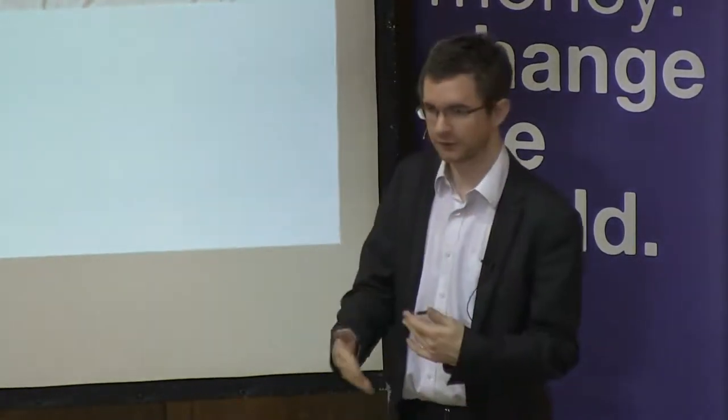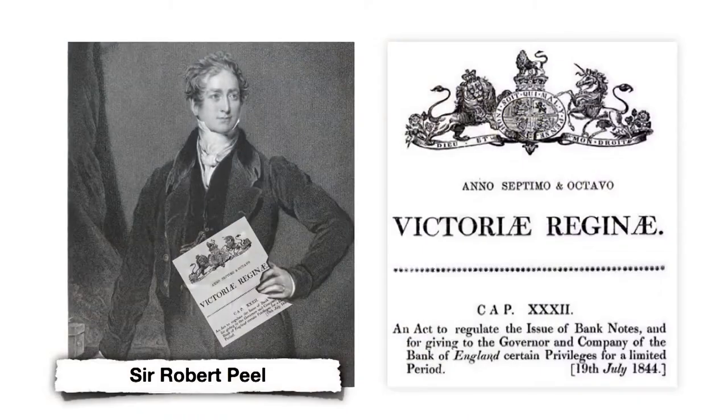They created too much money, and it started to cause instability in the economy. It caused banking crises. And after a number of years of this happening, the government of the day — a Conservative prime minister, Sir Robert Peel — stepped in and said, we can no longer allow banks to issue paper money because of the problems that it's causing in the economy.